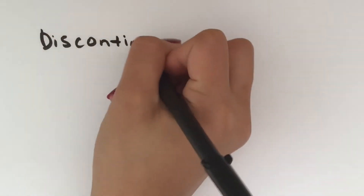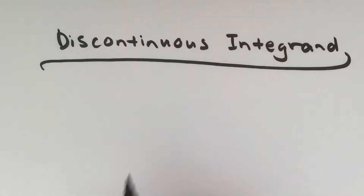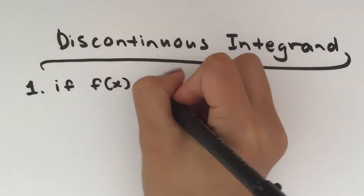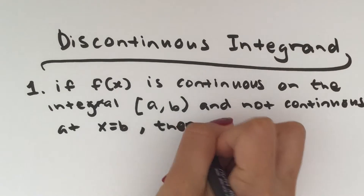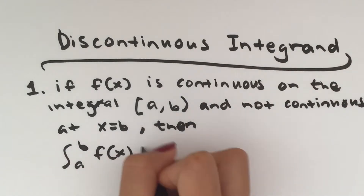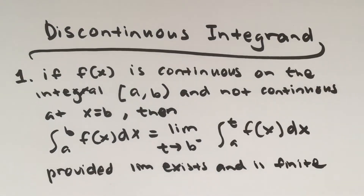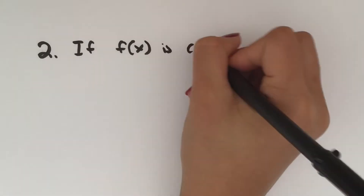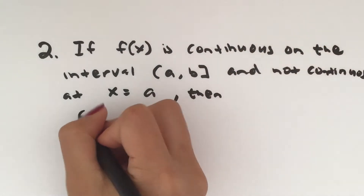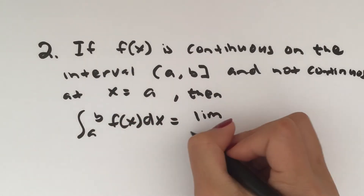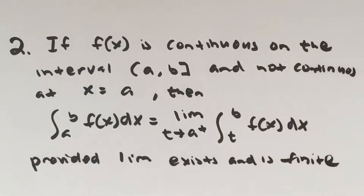Now we're going to look at improper integrals with discontinuous integrands. These are basically the same with a subtle difference, and they have four general cases. The first is that if f(x) is continuous on [a, b) and not continuous at x = b, then the integral from a to b of f(x) dx equals the left-hand limit as t approaches b of the integral from a to t of f(x) dx, provided the limit exists and is finite. The second case is that if f(x) is continuous on (a, b] and not continuous at x = a, then the integral equals the right-hand limit as t approaches a of the integral from t to b of f(x) dx, provided the limit exists and is finite.